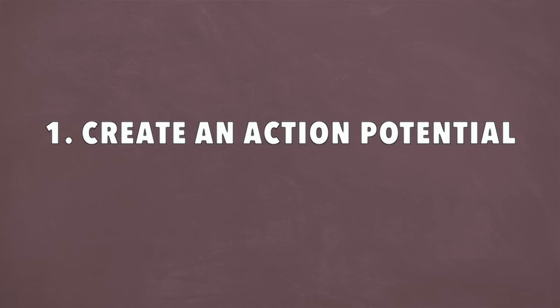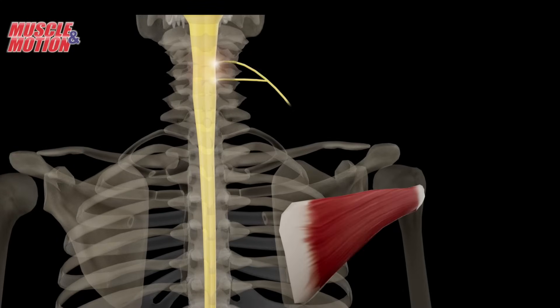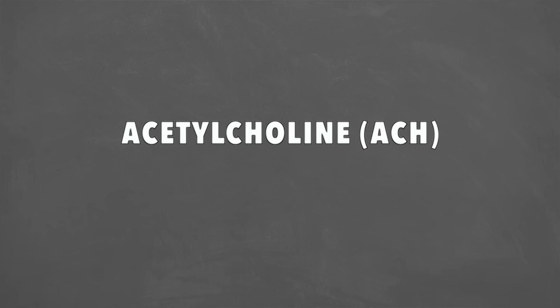Step number one: we have to create an action potential. This is generally created in the primary or secondary motor cortex of the brain. Just know that the brain is sending a signal down to the muscle to activate. If I want to contract my bicep, I have to create the signal in my brain and send it down the central nervous system, the peripheral nervous system, all the way to the neuromuscular junction to get that muscle to activate. Step number two is propagating that signal all the way to the neuromuscular junction. The primary neurotransmitter involved in transmitting that signal is acetylcholine, abbreviated ACH.